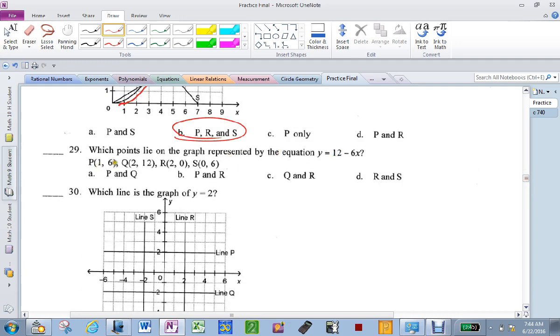Which of these points is on this graph? So you have to check x's and y's. So that's a 1 for x. 12 minus 6 is 6. So p is good. 12 minus 6 times 2 is 12. 12 minus 12 is 0. So q's out. 12 minus 6 times 2 is 0. So r is good. And 12 minus 6 is 6. So it's just p and r.